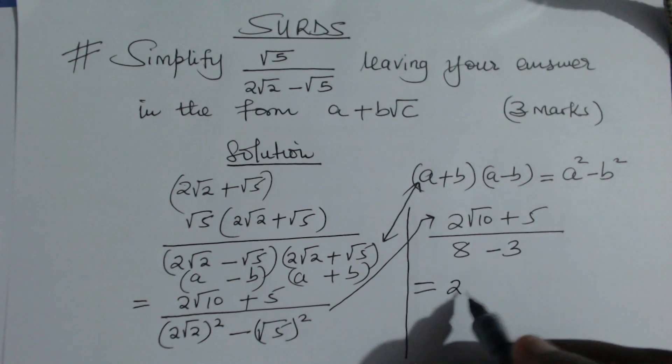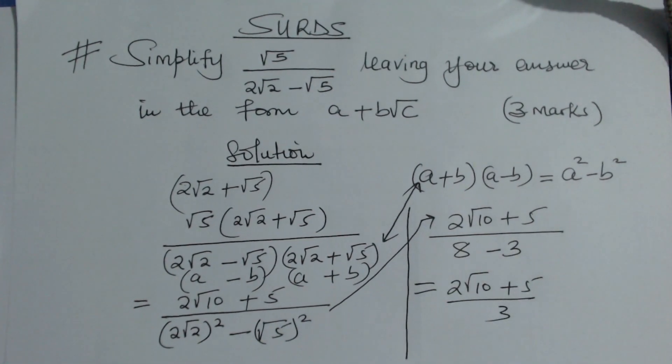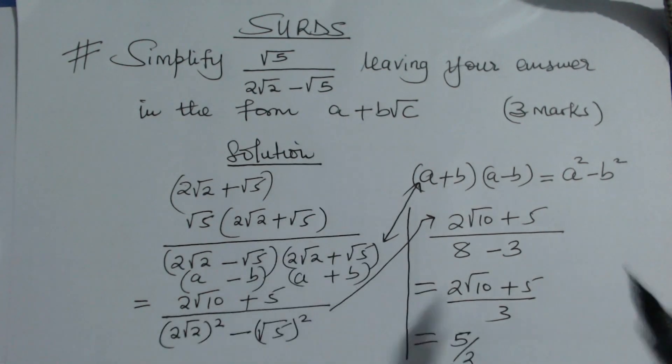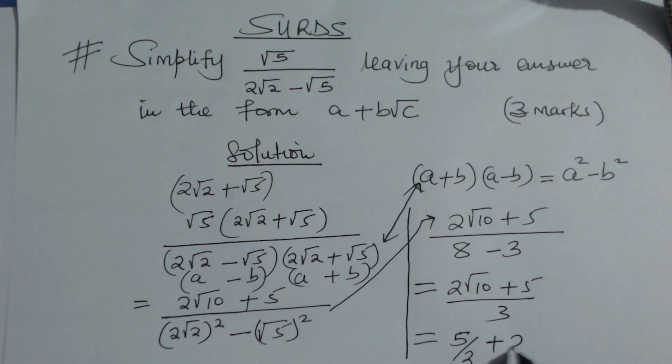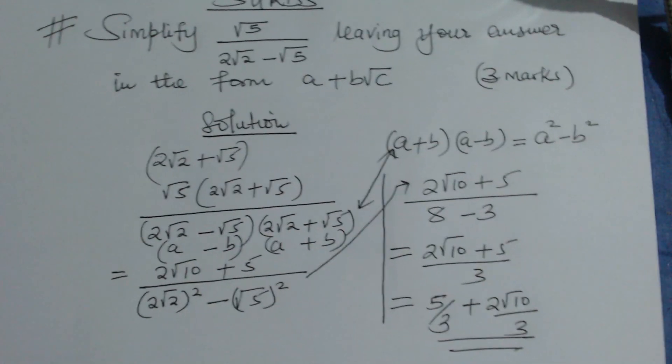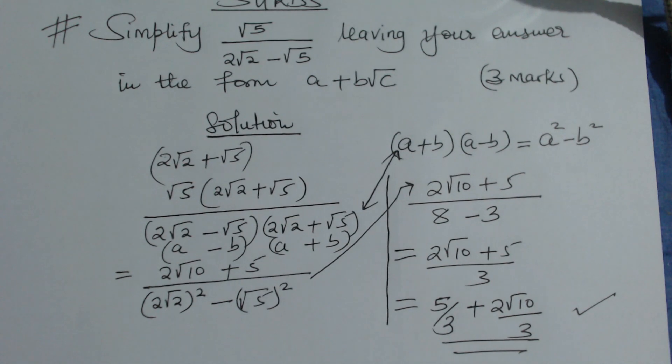Writing it in the required form, you'll get 5 divided by 3 - I'm converting it to this form - plus 2√10 divided by 3. So that is basically how you're supposed to solve that question.